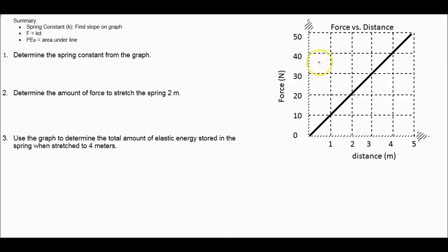So here we have a graph of force versus distance for a certain spring. In summary, we can use this graph to find several things. We can find the slope on the graph to figure out the spring constant. We can use that spring constant to figure out the force for a certain distance that the spring is stretched or compressed. And if we'd like to find the elastic potential energy, we just find the area under that line.